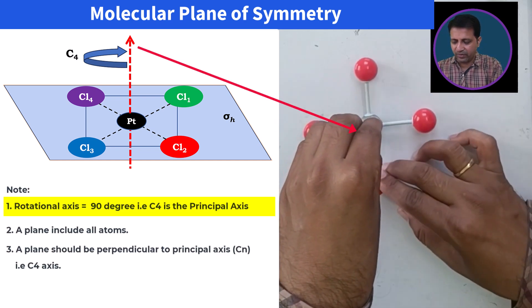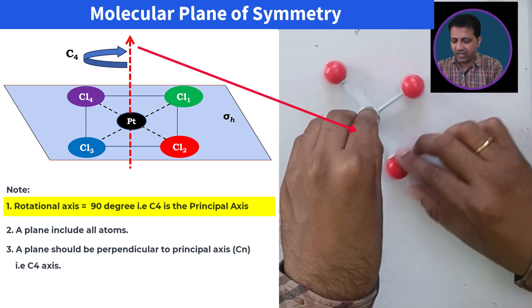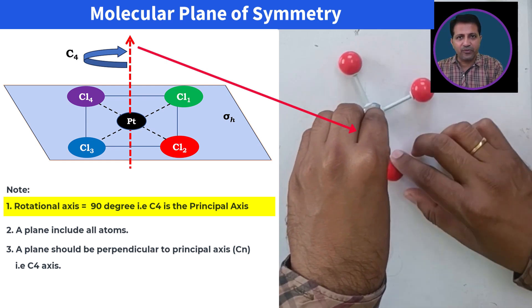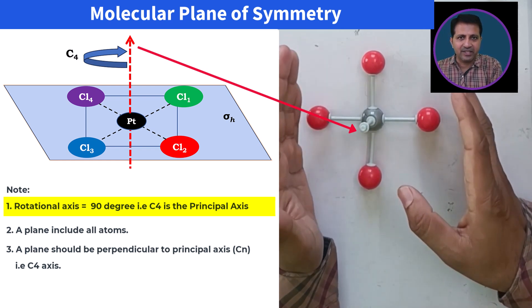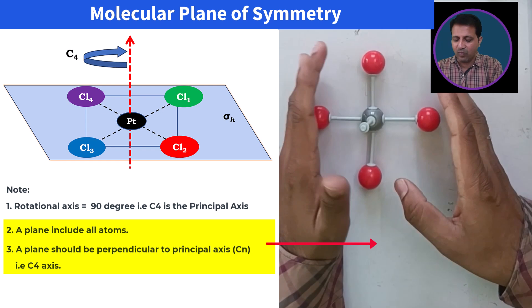If I rotate this molecule through 90 degrees, we call it a C4 axis. As you see, this model is placed on the table. This table itself acts as a molecular plane.